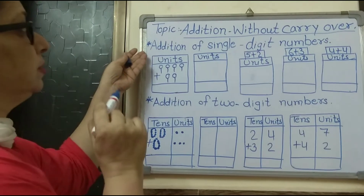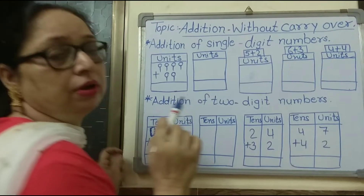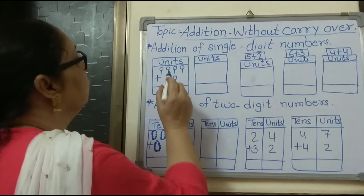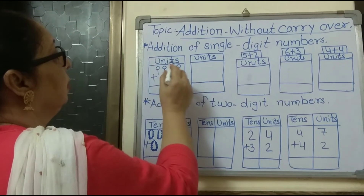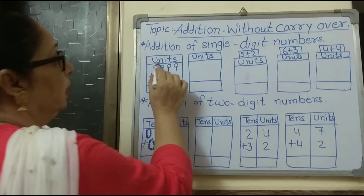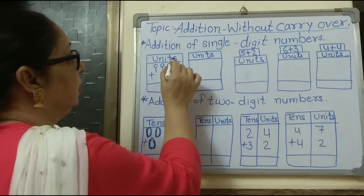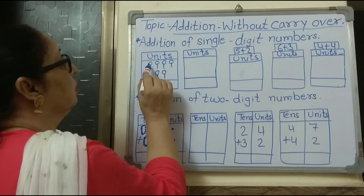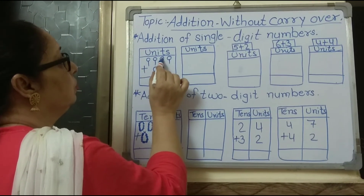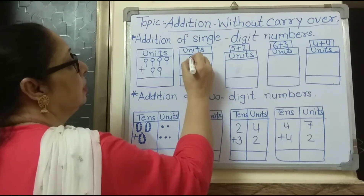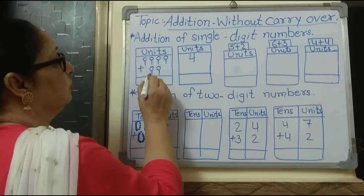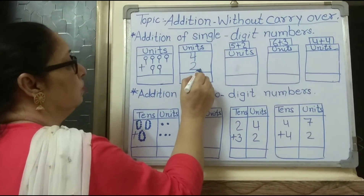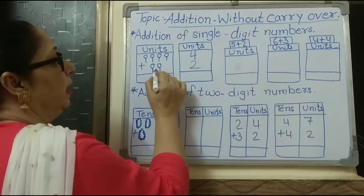The first question is addition of single digit numbers. There are some pictures. The first column is the units column. Here we have four units in the first picture, and the next picture shows two units.